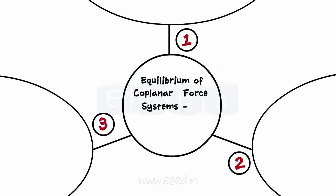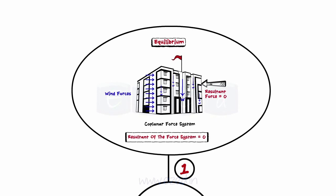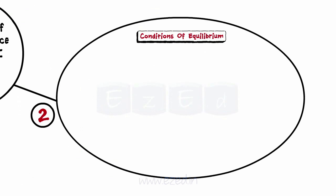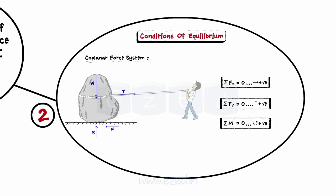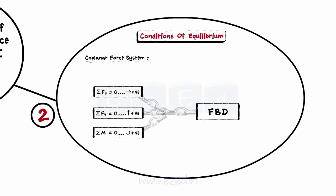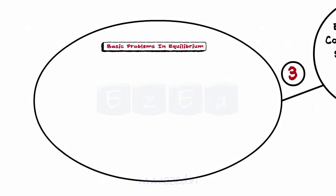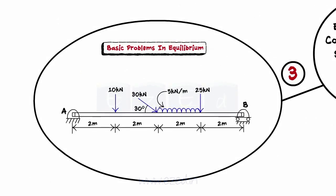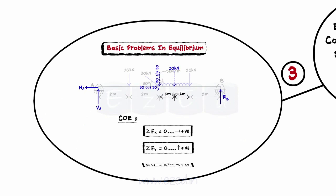Let's have a quick review of what we have studied in this lecture. The state of a body under a zero resultant force is known as the equilibrium of forces. For a coplanar force system to be in equilibrium, the resultant of the force system should be zero. We then learnt the conditions of equilibrium of a coplanar force system: sum of all forces in the x direction is zero; sum of all forces in the y direction is zero; sum of moments of all forces is zero. With the help of free body diagrams and on applying the above conditions, we will be able to analyze a coplanar force system in equilibrium. We then solved a few problems helpful to understand the concept behind equilibrium of a coplanar force system.